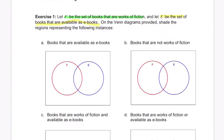Let's do that. Books that are available as e-books. So we just want the e-books. So I'm going to color that in or shade that in just like this. It's this circle. Let me just pick blue. That makes sense. It's this circle right here. So there it is.